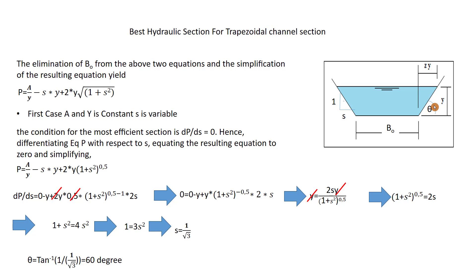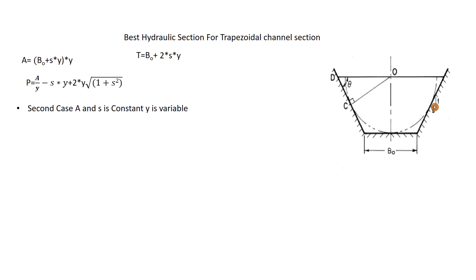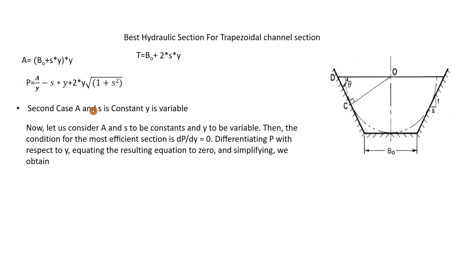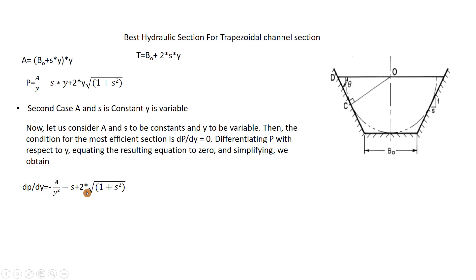Now for Case 2: A and s are constant, y is variable. We differentiate P with respect to y and set dP/dy = 0. The derivative gives: −A/y² − s + 2√(1 + s²) = 0. Substituting A = (b₀ + sy)·y, we replace A/y² with (b₀ + sy)/y, so the equation becomes: −(b₀ + sy)/y − s + 2√(1 + s²) = 0.